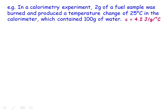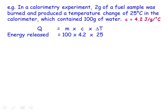For example, if we had a calorimeter containing 100 grams of water, and as a result of the reaction its temperature increased by 25 degrees C, then the amount of energy transferred to the water equals 100 times 4.2 times 25, which is 10,500 joules, or 10.5 kilojoules. Since we burnt 2 grams of fuel, we could work out that the energy released was 5.25 kilojoules per gram of fuel, and we could compare this to the energy released by different fuels.